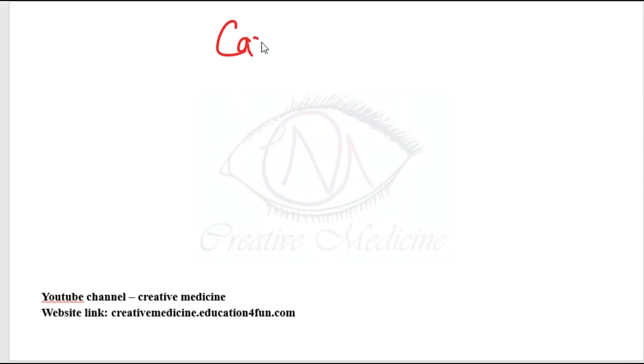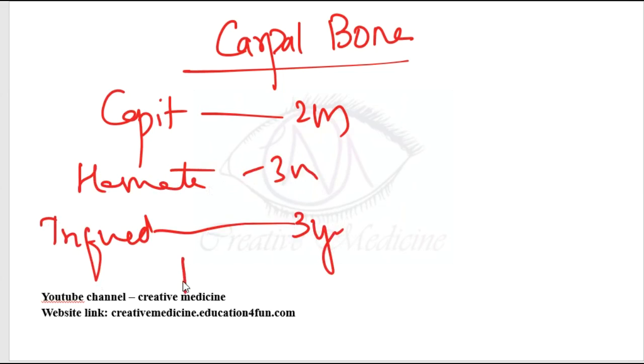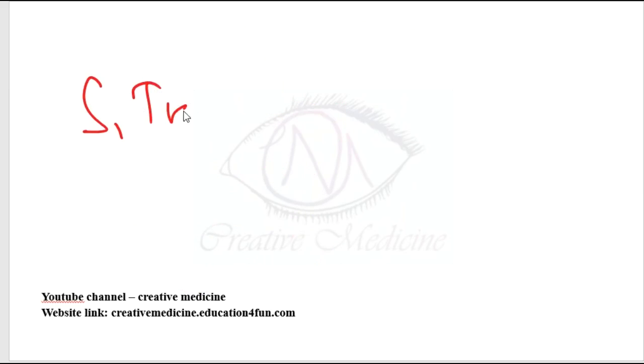Carpal bones: Capitate appears by 2 months, hamate by 3 months, triquetral by 3 years, lunate by 4 years, scaphoid, trapezium and trapezoid by 5 to 6 years, and pisiform by 10 to 12 years.